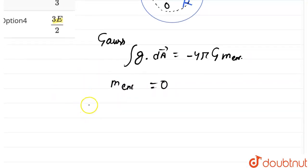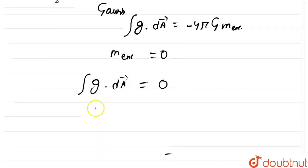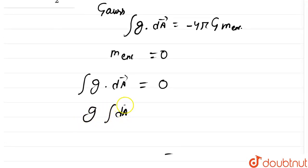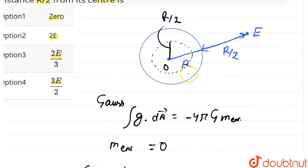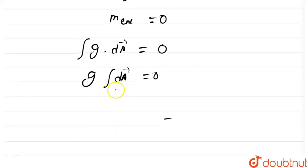So our Gauss's law will give us gravitational field intensity into area vector is equal to 0. The gravitational field intensity into integration of area vector is equal to 0. Integration of area vector will get the total area of the Gaussian surface. This is our Gaussian surface with radius R/2. So, the total area won't be 0. This implies gravitational field intensity must be 0.